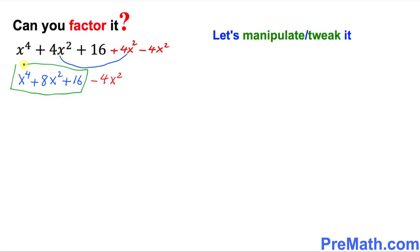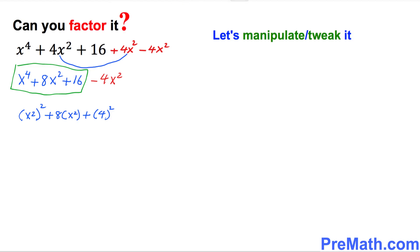Now I want you to look at this part only. I'm going to focus on this part. This could be written as x⁴, which I can write as (x²)², plus 8x², plus 16, which I can write down as 4 squared.